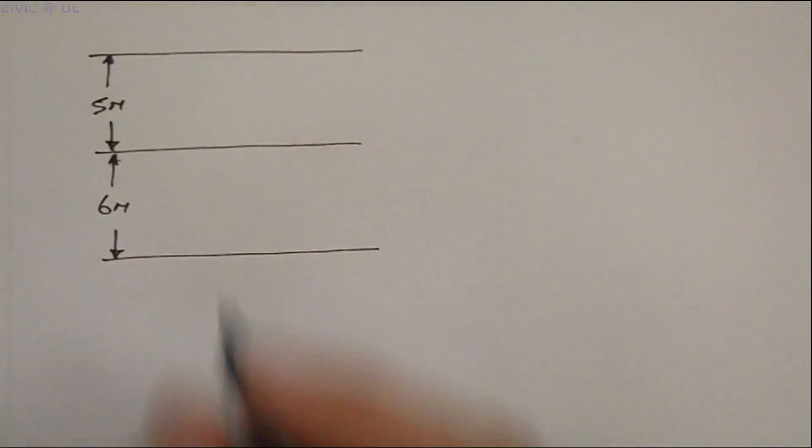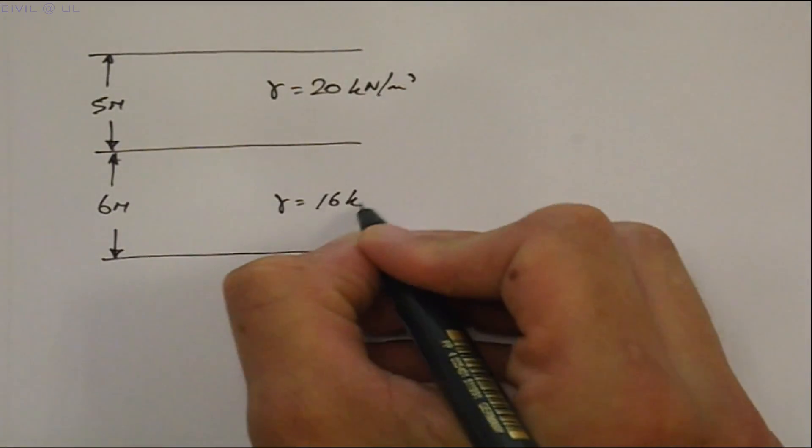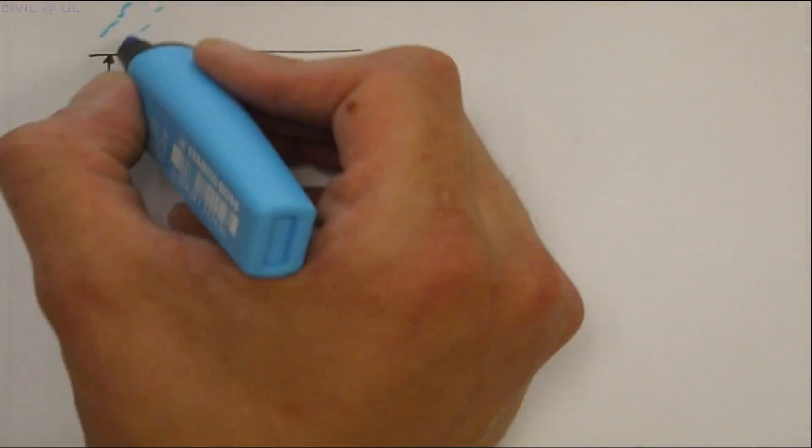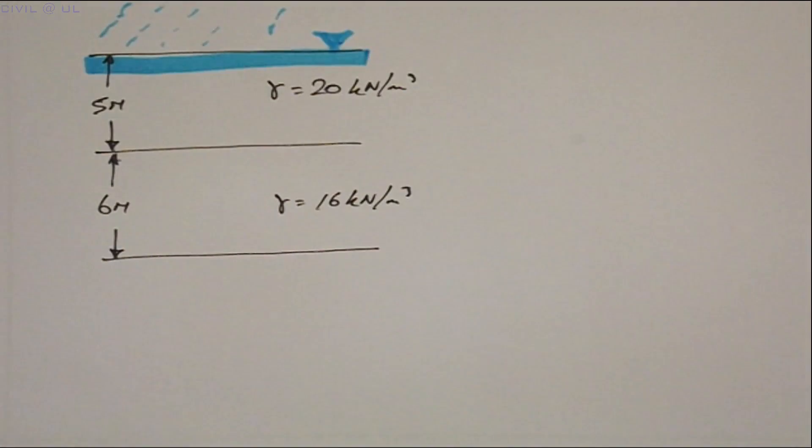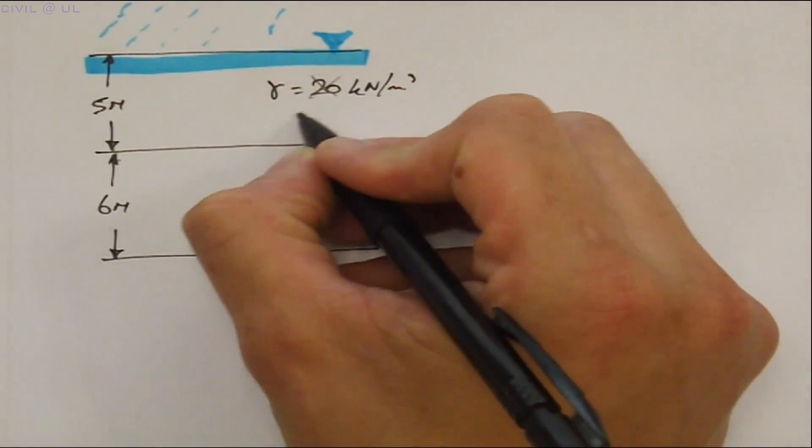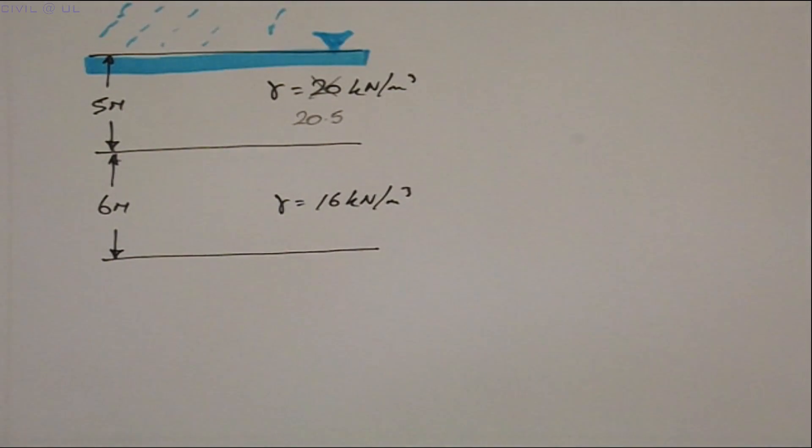In our next example let's say the water table rises to ground level due to a period of prolonged rainfall. With the influx of rainfall this will increase the unit weight of the soil in strata one. Let's assume it increases to 20.5 kN per meter cubed.